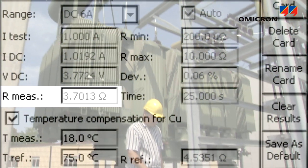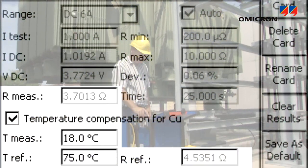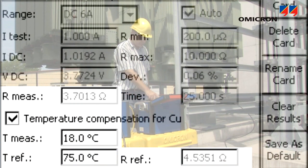Based on the measured resistance value, the CPC can calculate the corresponding value at a given reference temperature.